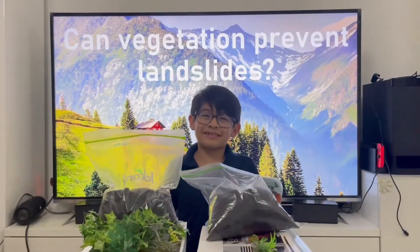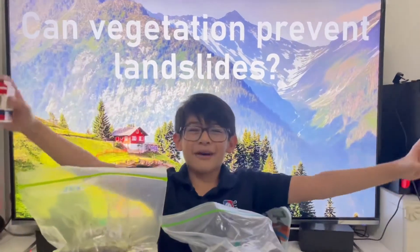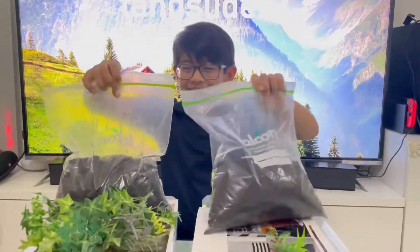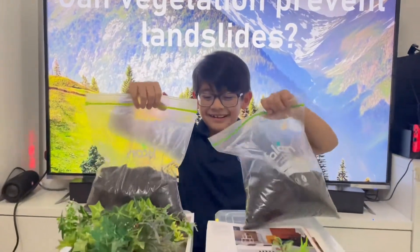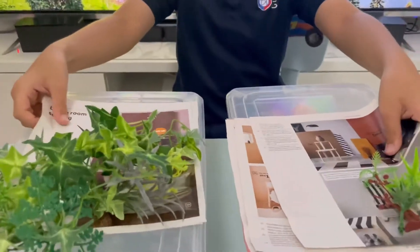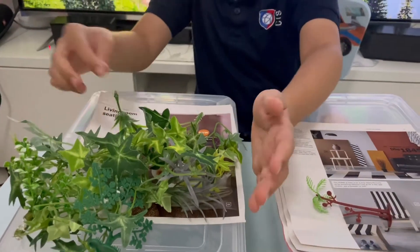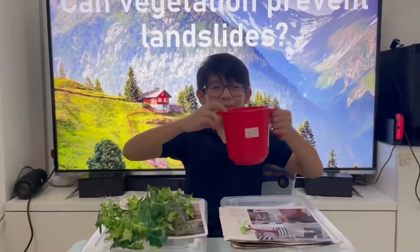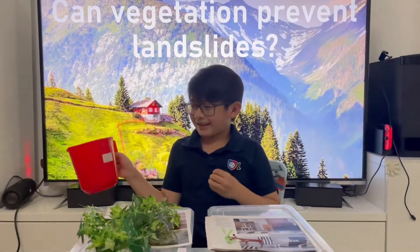These are the materials to my experiment. First off, two Lego houses with the same number of bricks. Then, one bag of soil in each container. Then, newspapers! And most important of all, trees! And of course, a bucket to represent the flash flood presenting the landslide.